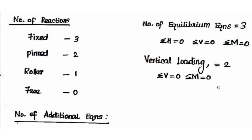In case of vertical loading only, we can consider only vertical equilibrium. Summation of vertical forces = 0 and summation of moments = 0, giving number of equilibrium equations equal to 2. In this special case, for fixed support the number of reactions is 2, and for pin support it is 1. For roller support, the number of reactions is 1.